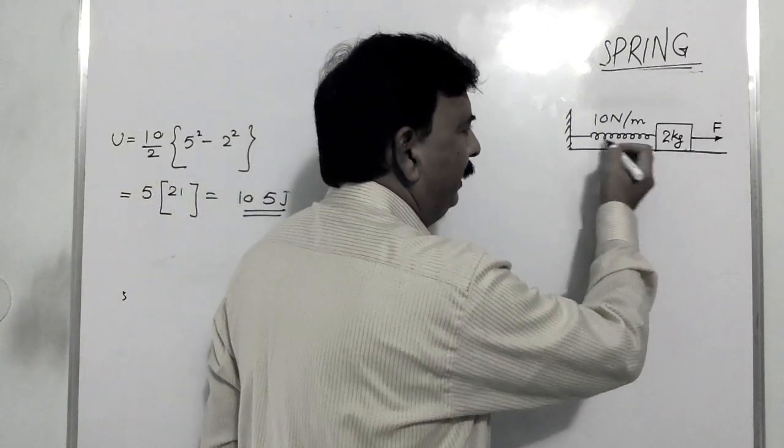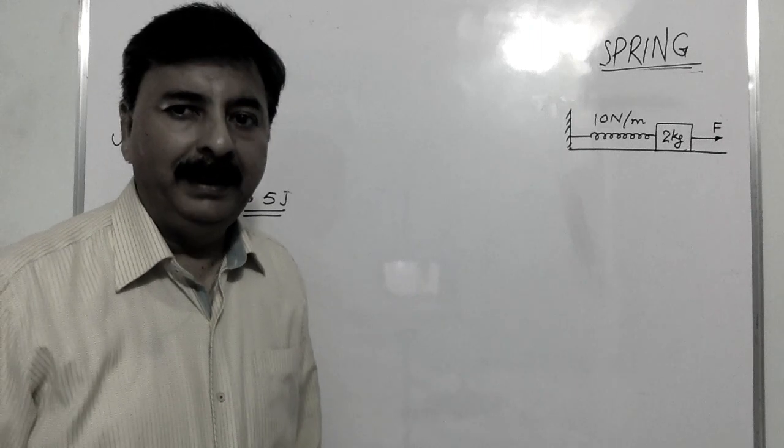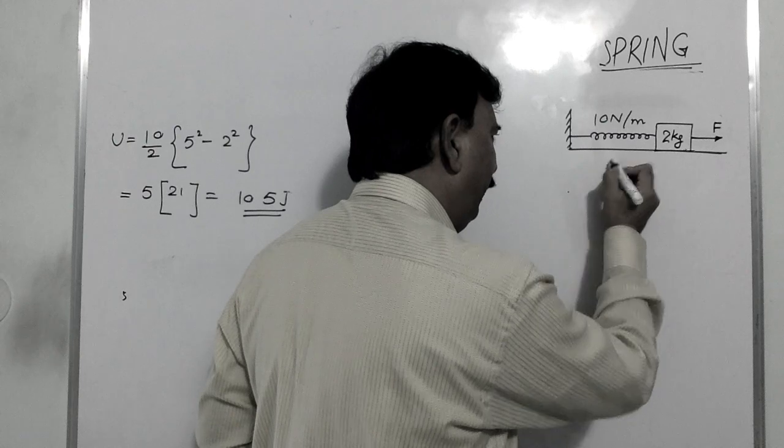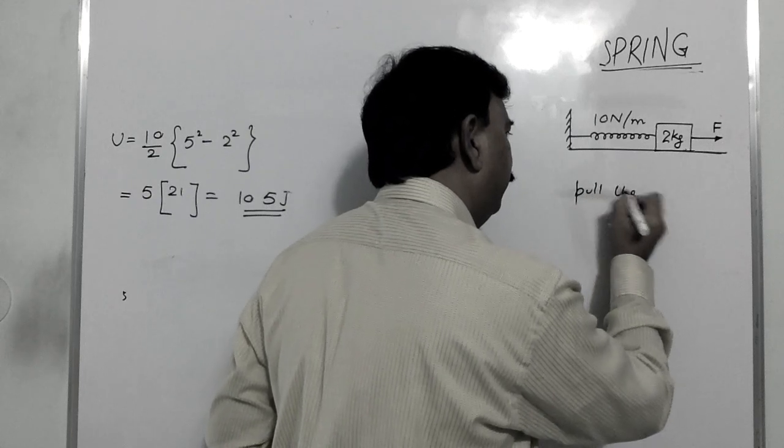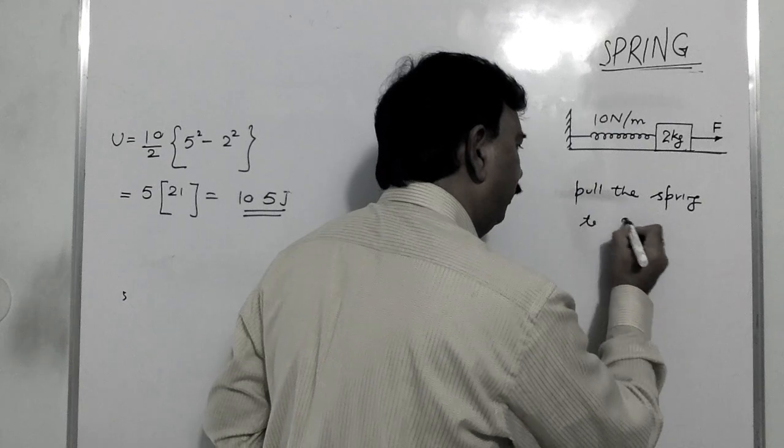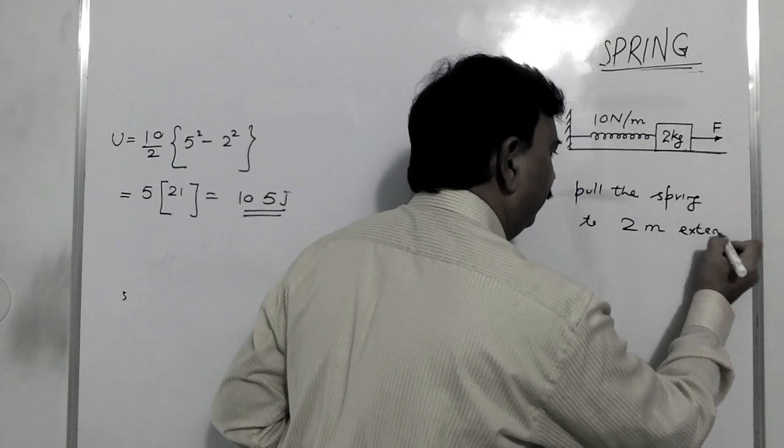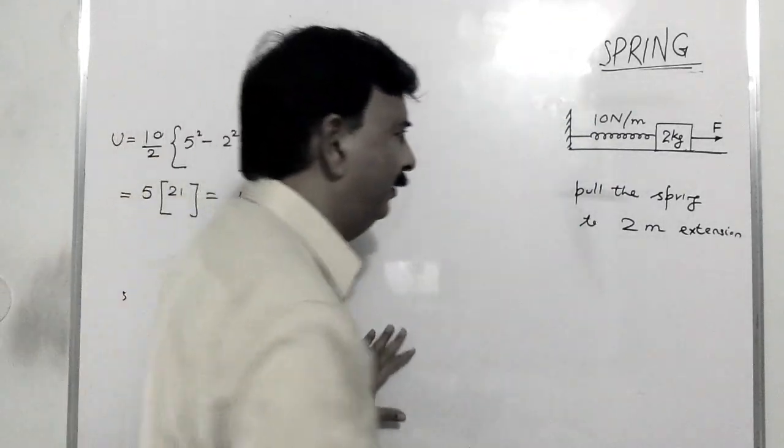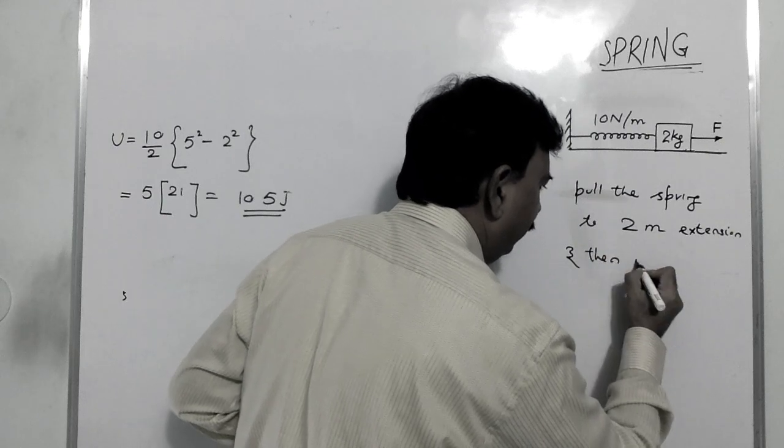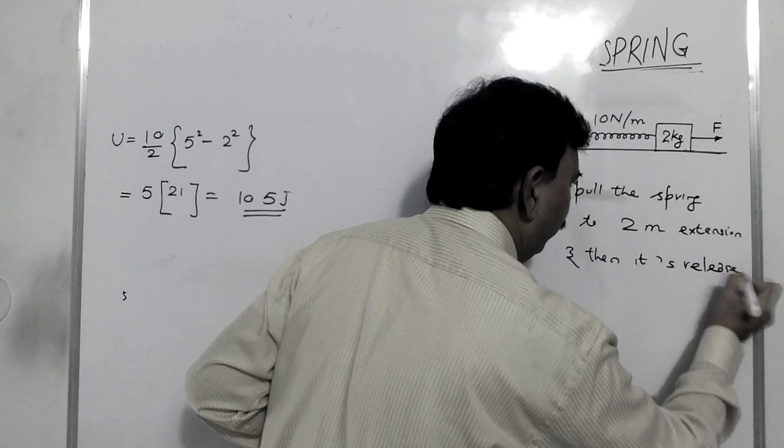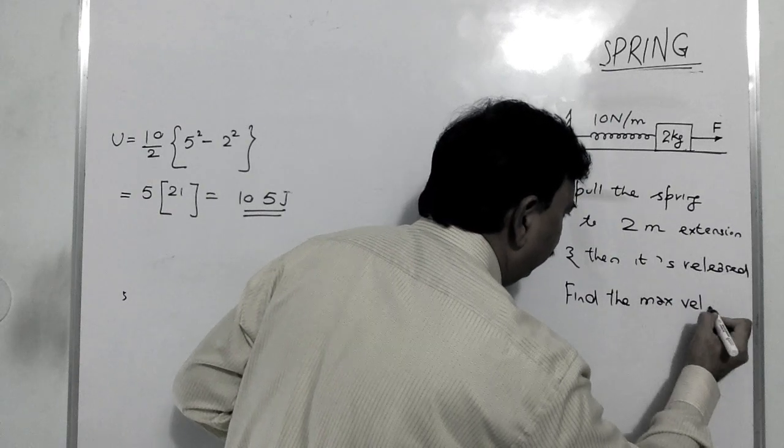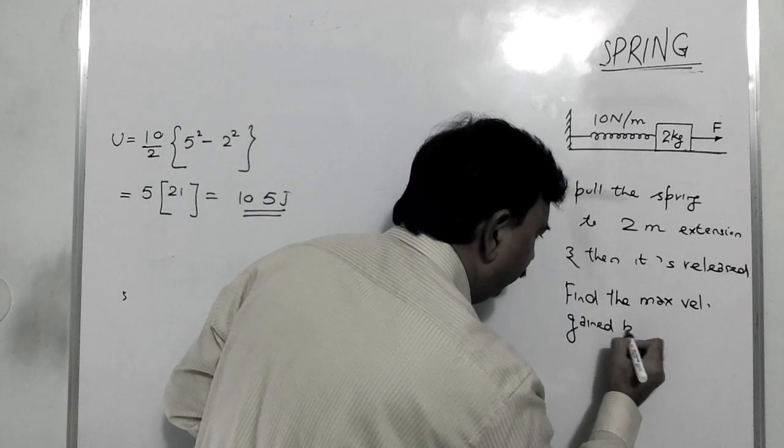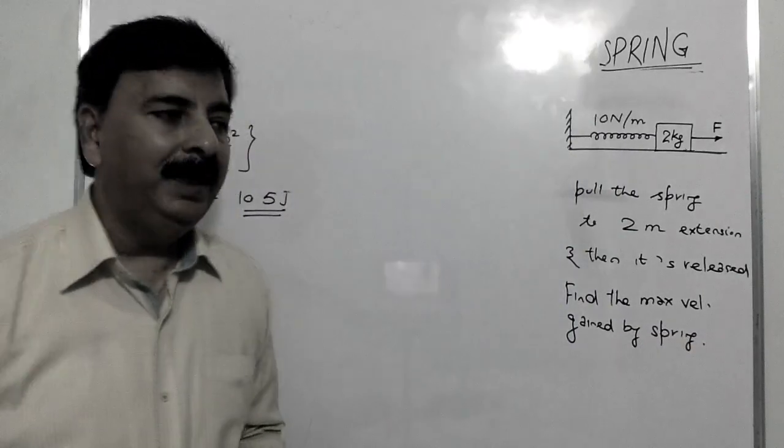So what was the previous DNA question? Now the question. A body of mass 2 kg is connected with a spring of spring constant 10 N per meter. A force is applied and it pulls the spring to 2 meter extension. A force to have 2 meter extension, and then it is released.